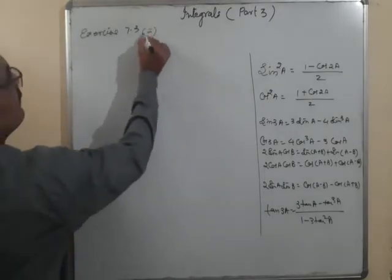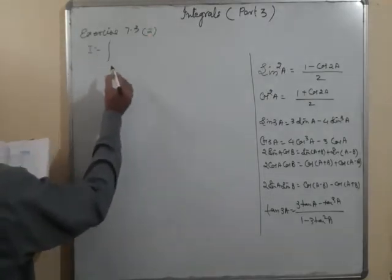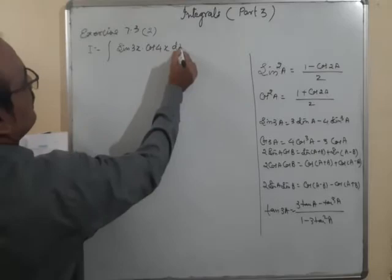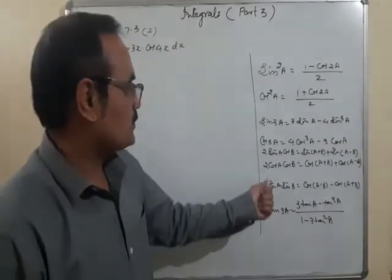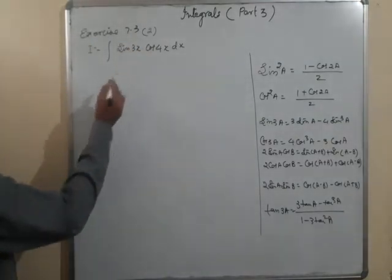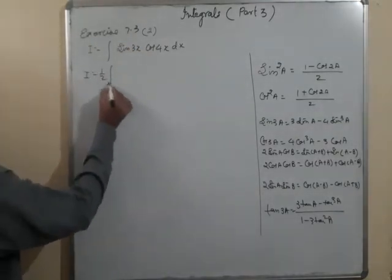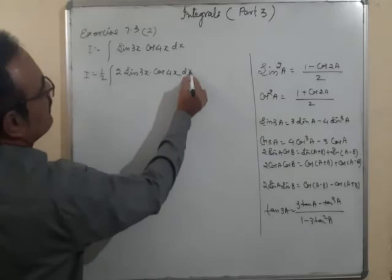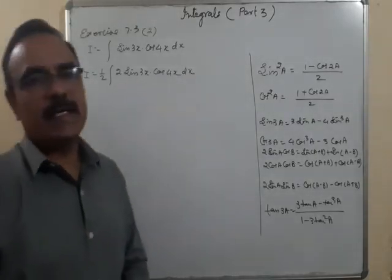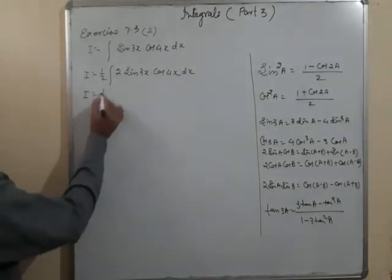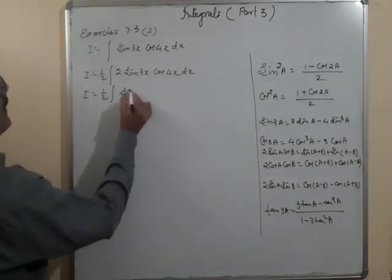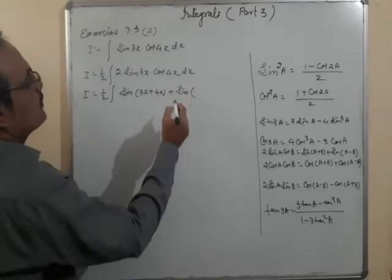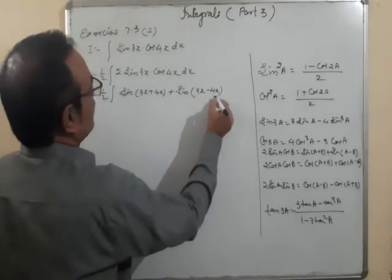The second question: I = ∫sin3x·cos4x dx. It is not in the form of 2sinA·cosB, but we multiply and divide by 2: I = (1/2)∫2sin3x·cos4x dx. Now using the identity, I = (1/2)∫[sin(3x+4x) + sin(3x−4x)] dx = (1/2)∫[sin7x + sin(−x)] dx.